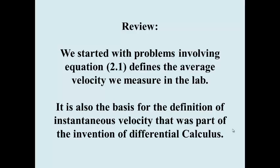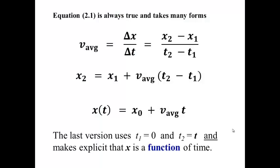I also want to do a quick review of the things that we did earlier that leads to all of this, especially concerning equation 2.1 because as a definition of average velocity, it's something that we use in the lab. It's also the basis for defining the derivative of the position function that gives us the instantaneous velocity, and several other things that we use regularly in this class. I'm going to go through this rather quickly.